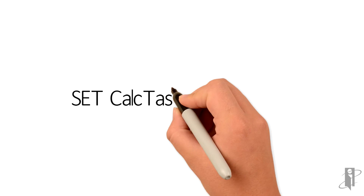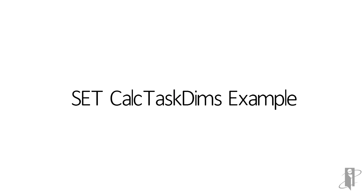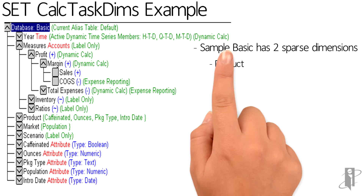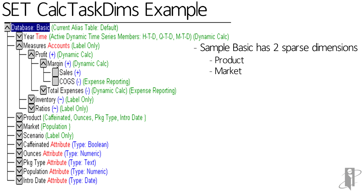Let me give you a simple example using SampleBasic. As you recall, SampleBasic has two sparse dimensions: product and market. Year, measures, and scenario are dense, and all the dimensions at the bottom are attribute dimensions.